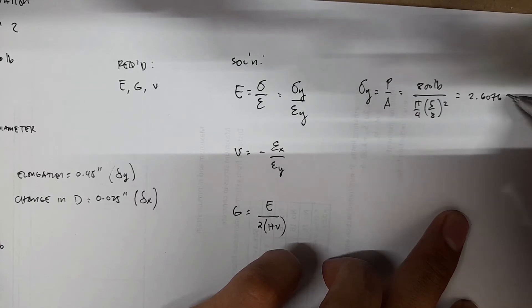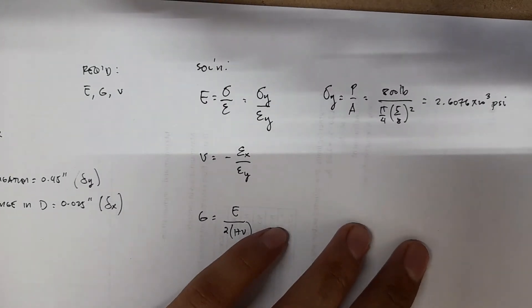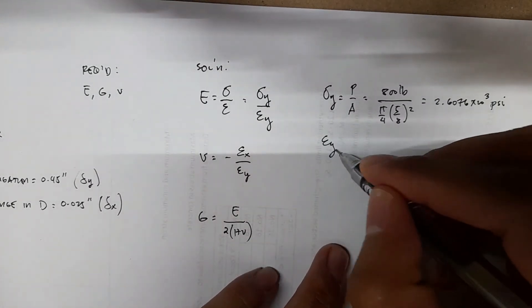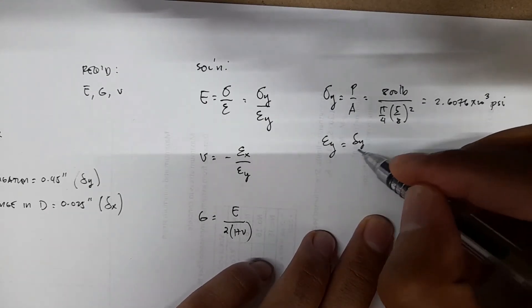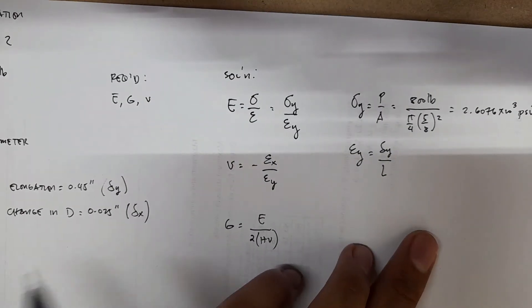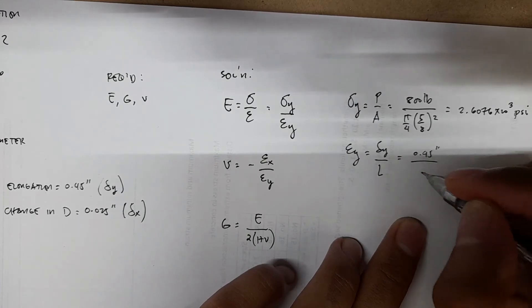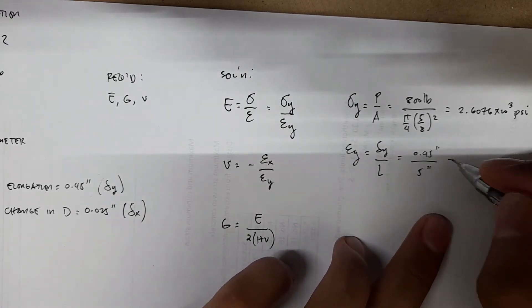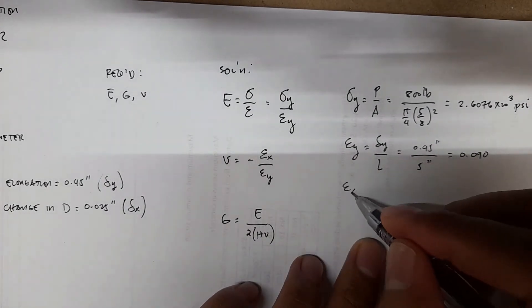We also have strain y, which equals deformation y divided by the original length. We're given the deformation y of 0.045 inches. The original length is 5 inches, so you have 0.090.